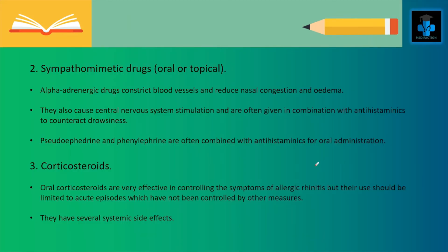Sympathomimetic drugs may be oral or topical. Alpha adrenergic drugs constrict blood vessels and reduce nasal congestion and edema; they also cause central nervous system stimulation and are often given in combination with antihistamines to counteract drowsiness. Pseudoephedrine and phenylephrine are often combined with antihistamines for oral administration. Oral corticosteroids are very effective in controlling symptoms of allergic rhinitis but their use should be limited to acute episodes not controlled by other measures, as they have several systemic side effects.